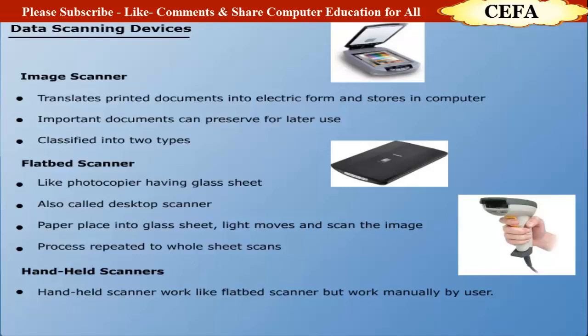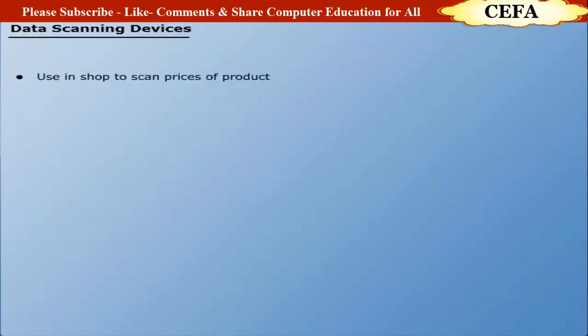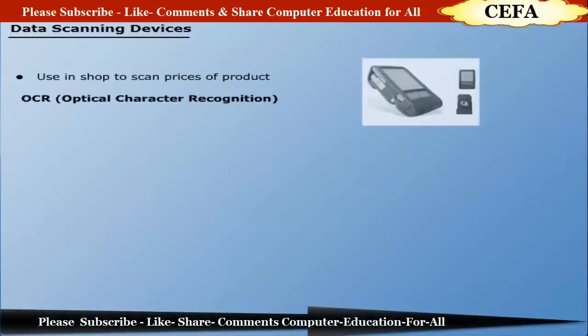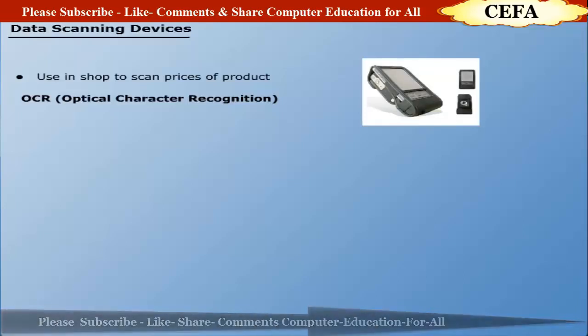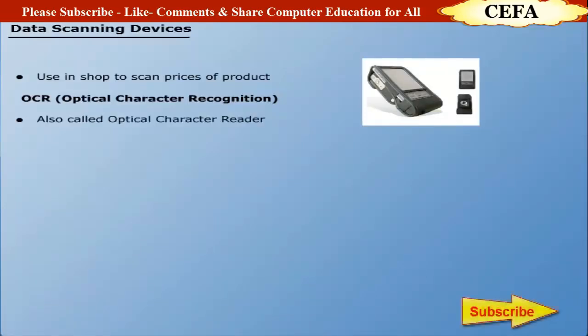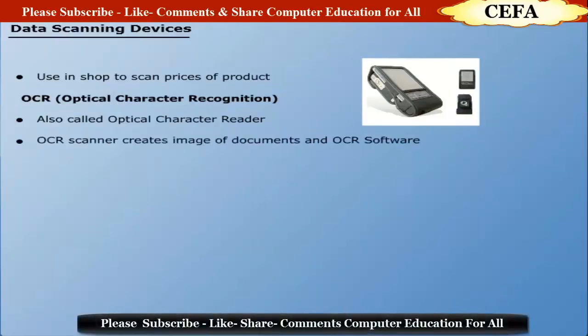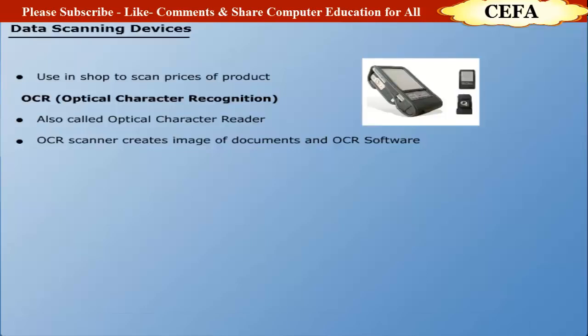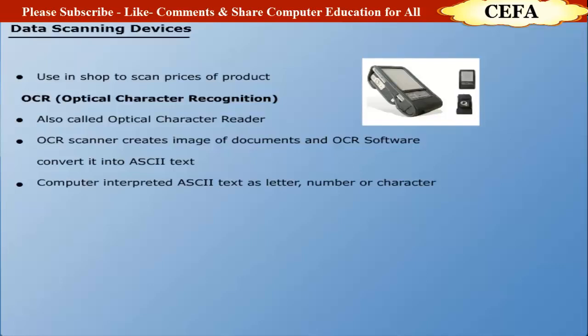Handheld scanners work much like a flat bed scanner but are operated manually by the user. The scanner is dragged slowly with its light on over documents or products. Handheld scanners are mostly used in shops to scan the price of products. Optical Character Recognition (OCR): OCR software enables the scanner to first create an image of a document, then convert that image into ASCII text, which the computer interprets as letters, numbers, and special characters.